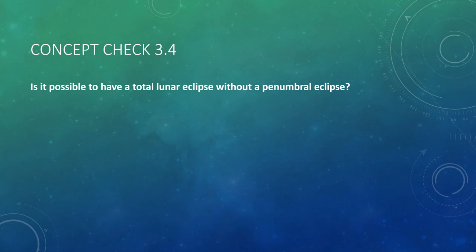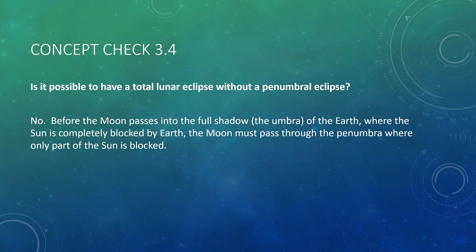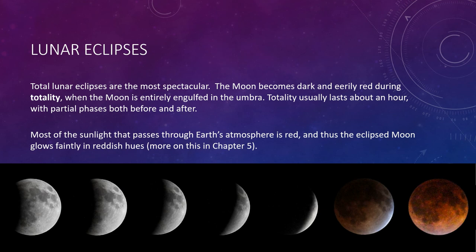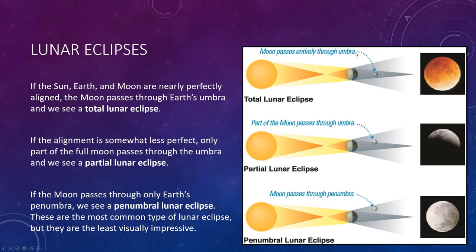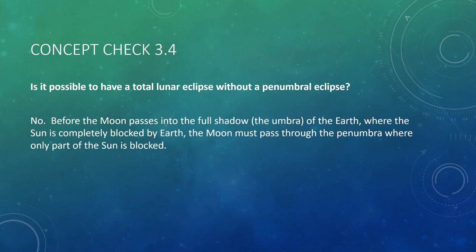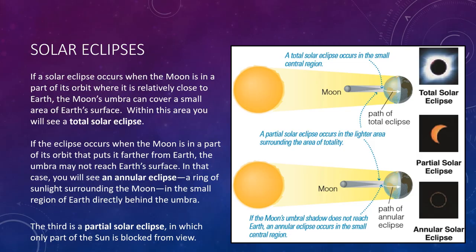Concept check: Is it possible to have a total lunar eclipse without a penumbral eclipse? The answer is simply no. Before the moon passes into the full shadow of the Earth — that is, the umbra where the sun is completely blocked — the moon must pass through the penumbra. So we will always get a penumbral eclipse before a total eclipse. For it to reach the dark region, it has to pass into the penumbra and then into the umbra, so you will always get this dimming penumbral eclipse before the total lunar eclipse.